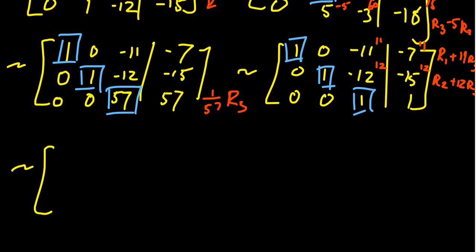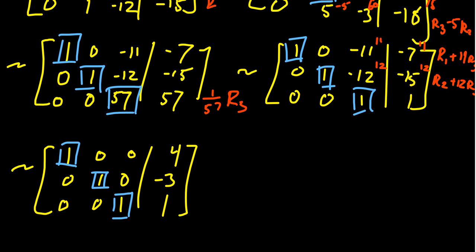As we simplify this matrix one more time, we get 1, 0. -11 plus 11 is 0. 11 minus 7 gives us 4. In the second row, we get 0, 1, 0. -12 plus 12 is 0. Then -15 plus 12 is -3. And last, we get 0, 0, 1, 1. Notice we now have obtained pivots in all three columns. Everything in a pivot position is a 1. Everything outside of it is 0. This is a clear indication that our coefficient matrix is in row reduced echelon form, which means we're done.